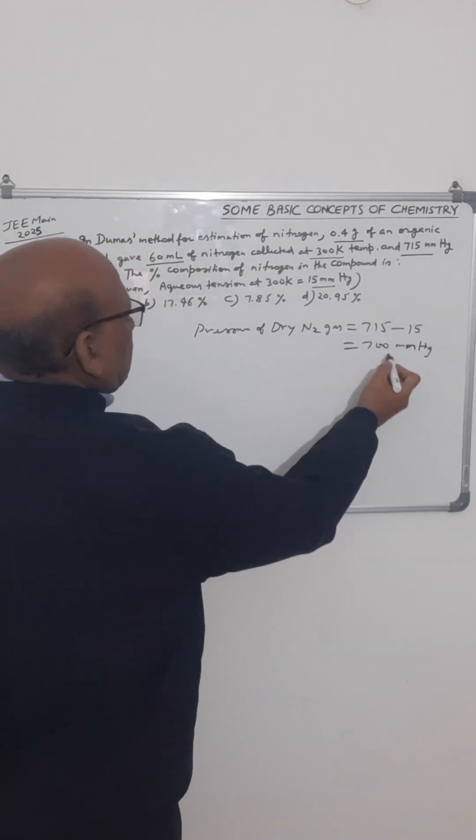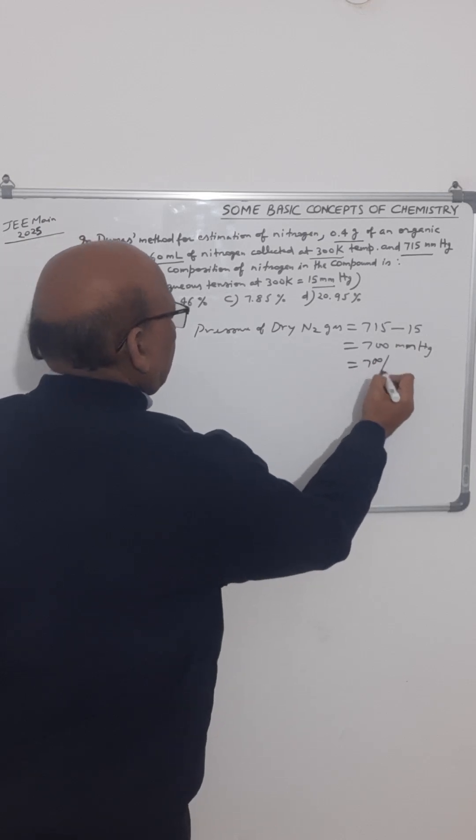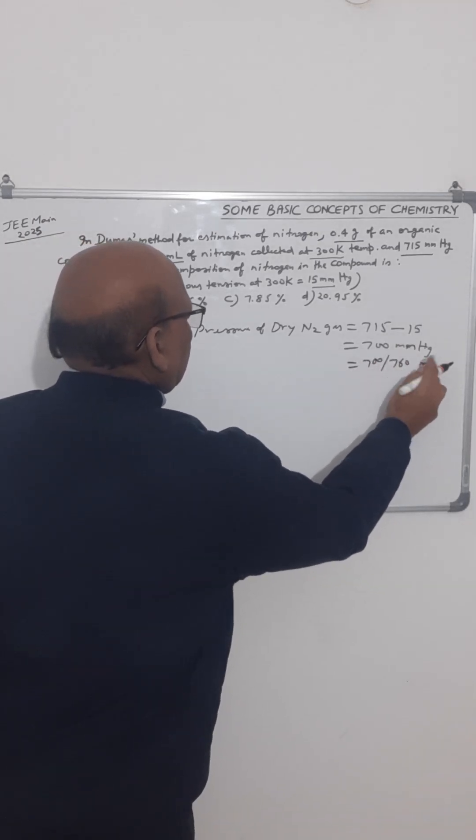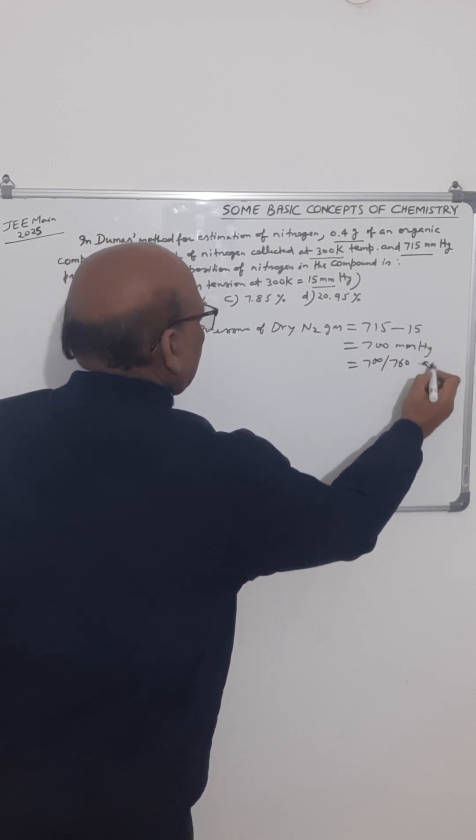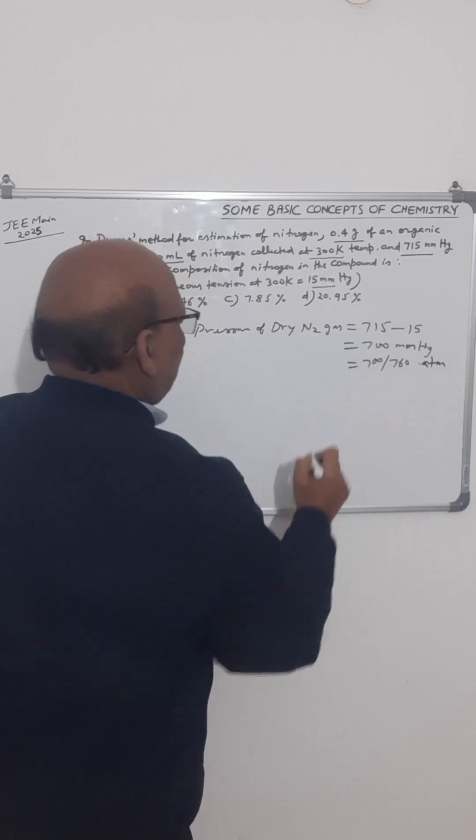Now this in atmosphere will be 700 divided by 760. This will be in atmosphere because one atmosphere is nothing but 760 mm Hg.